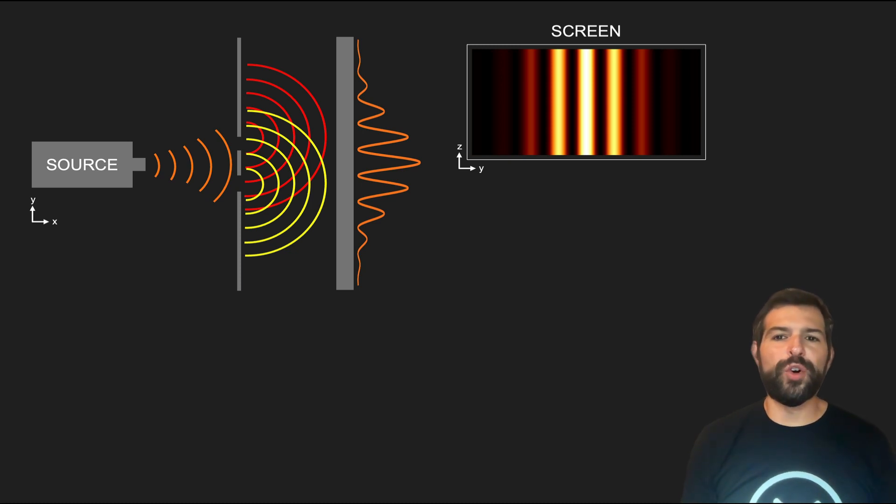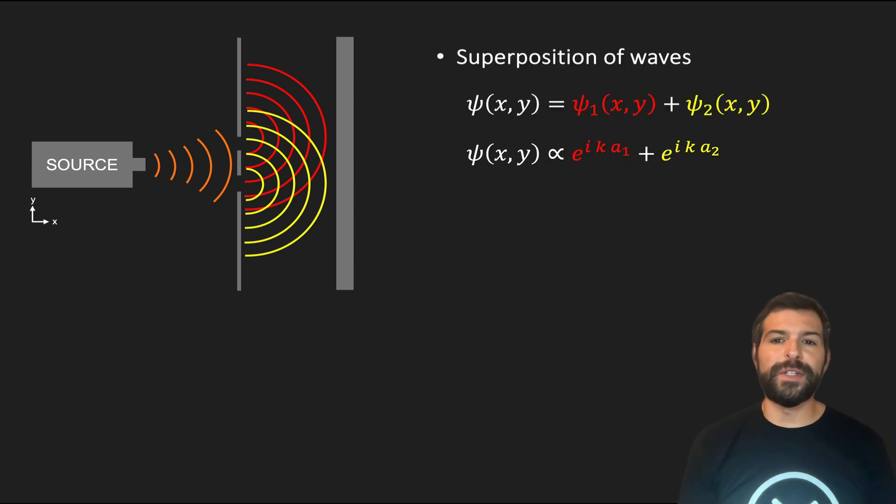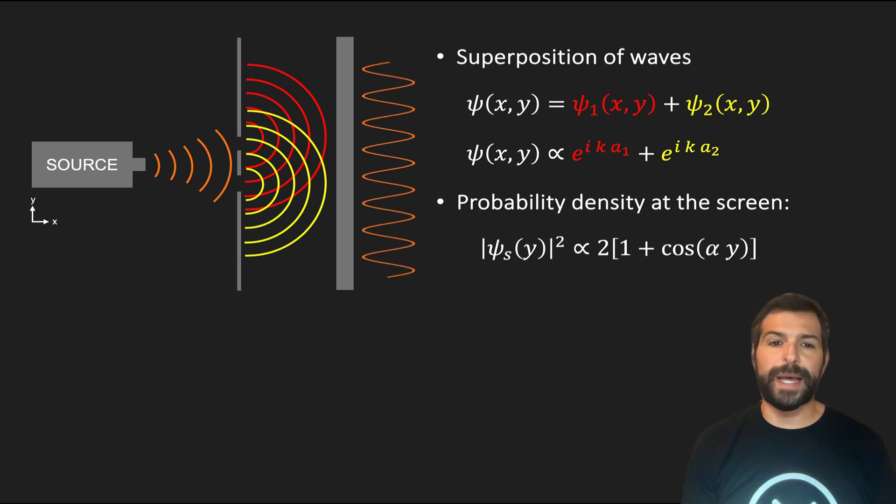In the previous video, we went over the double slit experiment and described why even single quantum particles, like photons and electrons, exhibit an interference pattern. Additionally, we glanced over the mathematical background to justify this behavior. Since we have a superposition of waves from the bottom and top slits, we arrive at an equation for the probability density at the screen, which clearly describes an interference pattern.